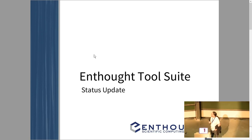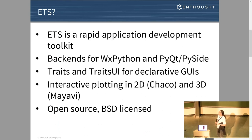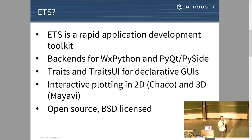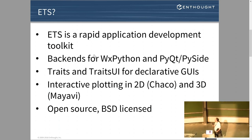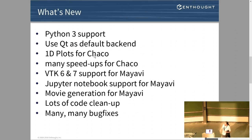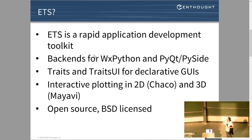I wanted to talk quickly about the Enthought tool suite. The Enthought tool suite is a rapid application development toolkit for building GUI applications in Python. It has backends using both WXPython and PyQt. It's basically built upon Traits and Traits UI — this is a bit like React in the JavaScript world. It allows you to do reactive programming, and then it has 2D and 3D plotting: Chaco and Mayavi built on top of it, open source, BSD licensed.